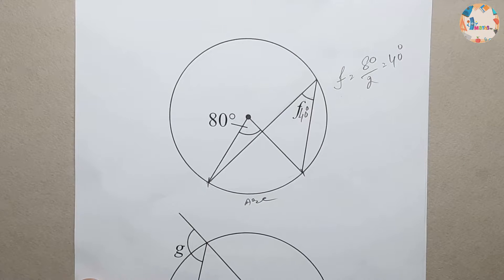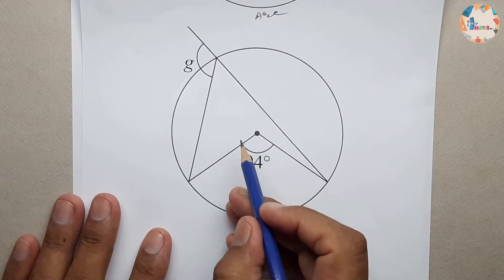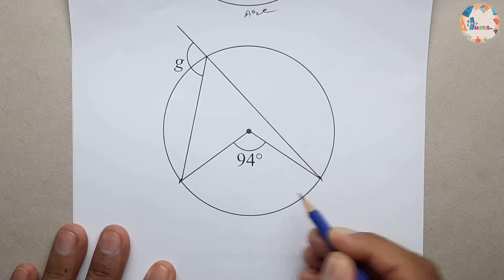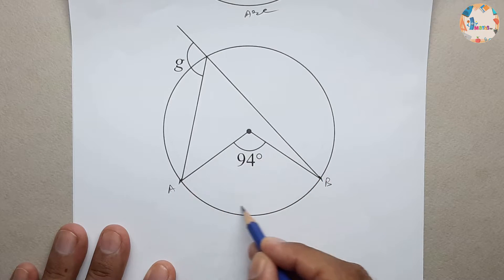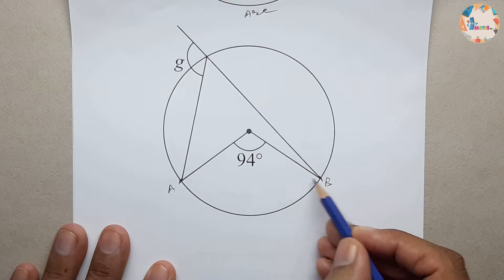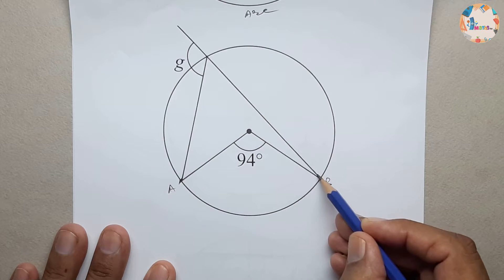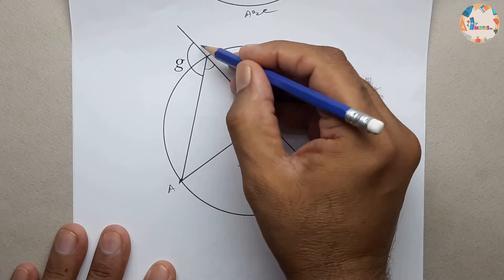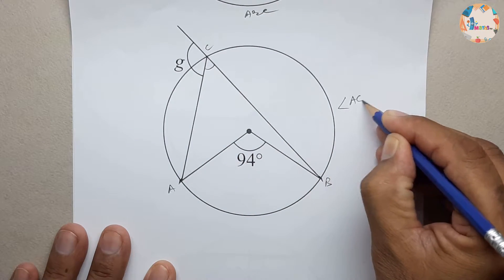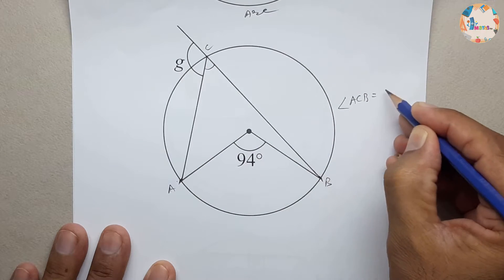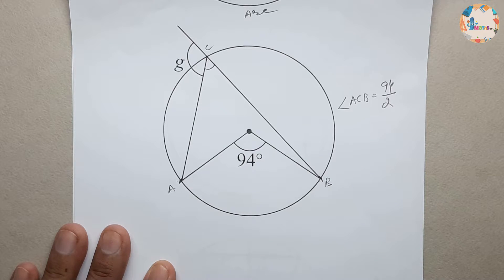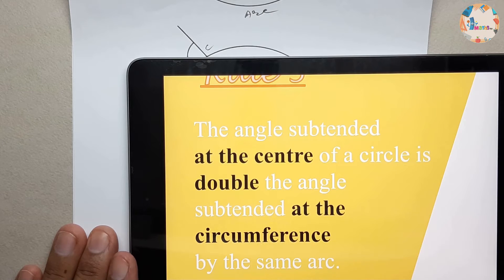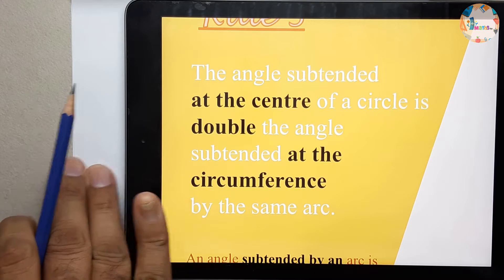Similarly, let's go through another example. This is a sample question with an angle of 94 degrees. We consider arc AB — this is the angle at the center which is 94 degrees, and the angle from the same arc up to the circumference is angle ACB. So angle ACB equals 94 divided by 2 by the same rule: the angle subtended at the center of the circle is double the angle subtended at the circumference by the same arc.